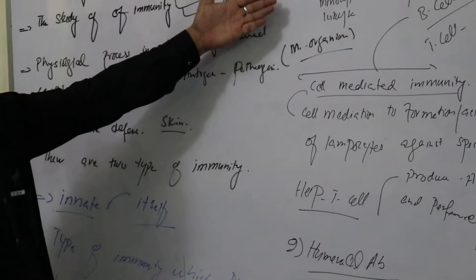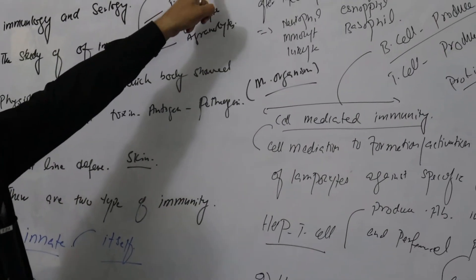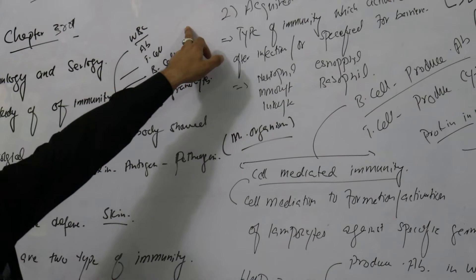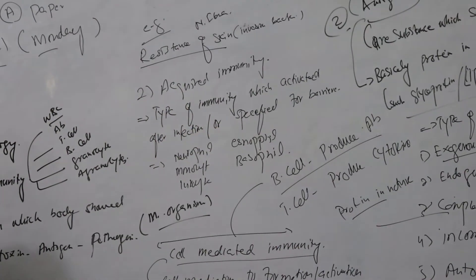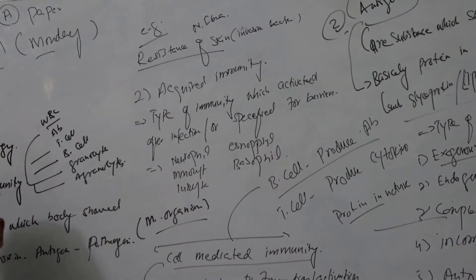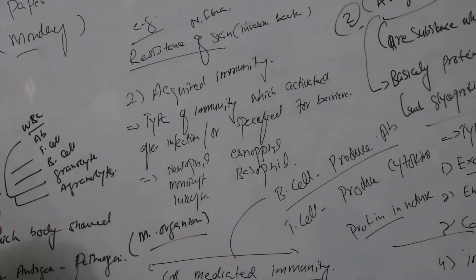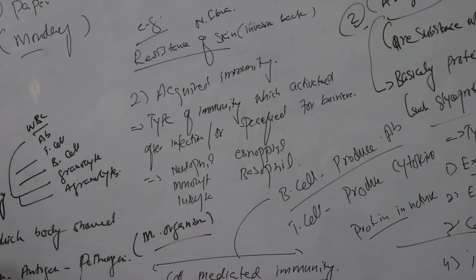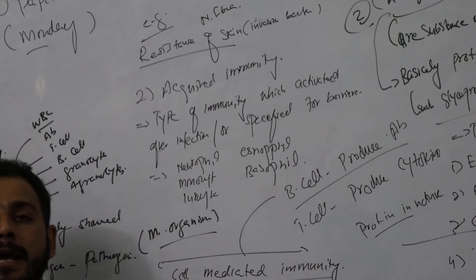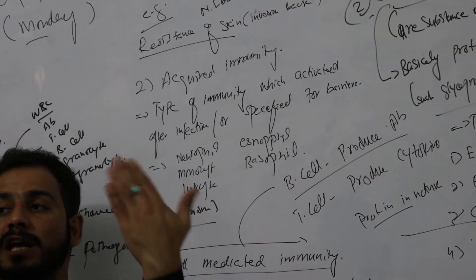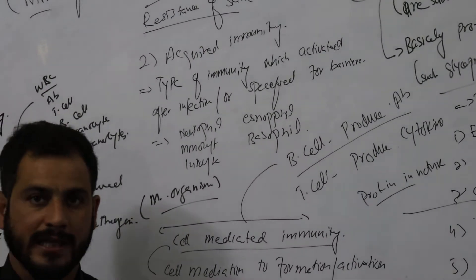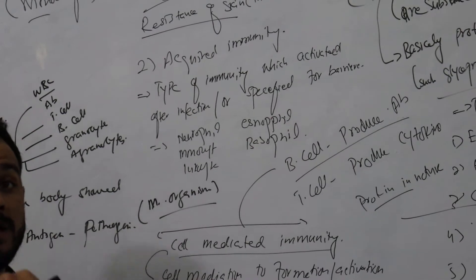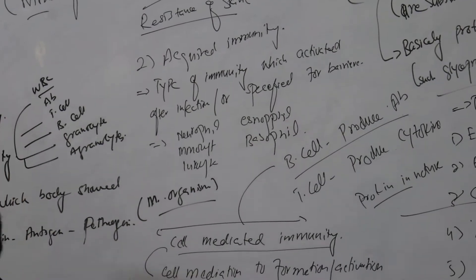The second type is acquired immunity. Acquired immunity means it is a type of immunity which responds to a specific infection.